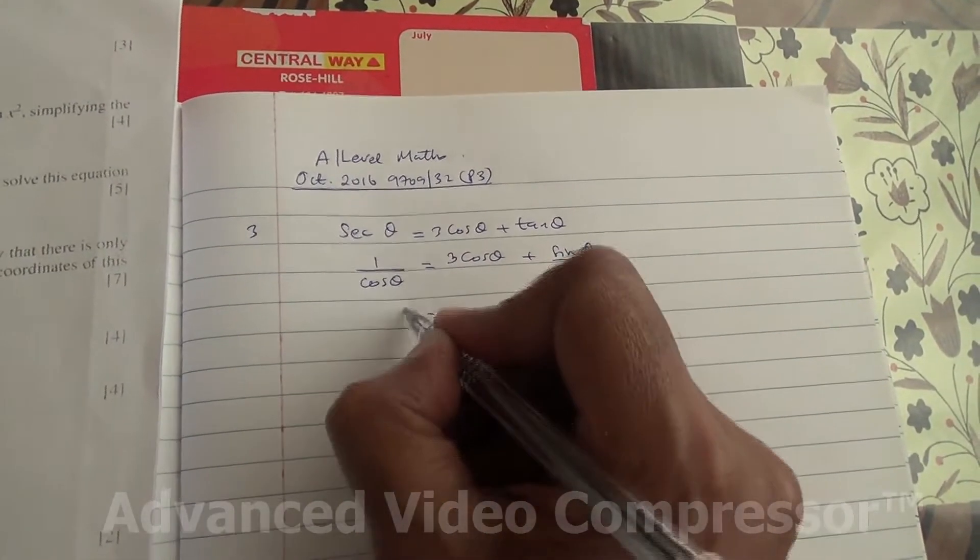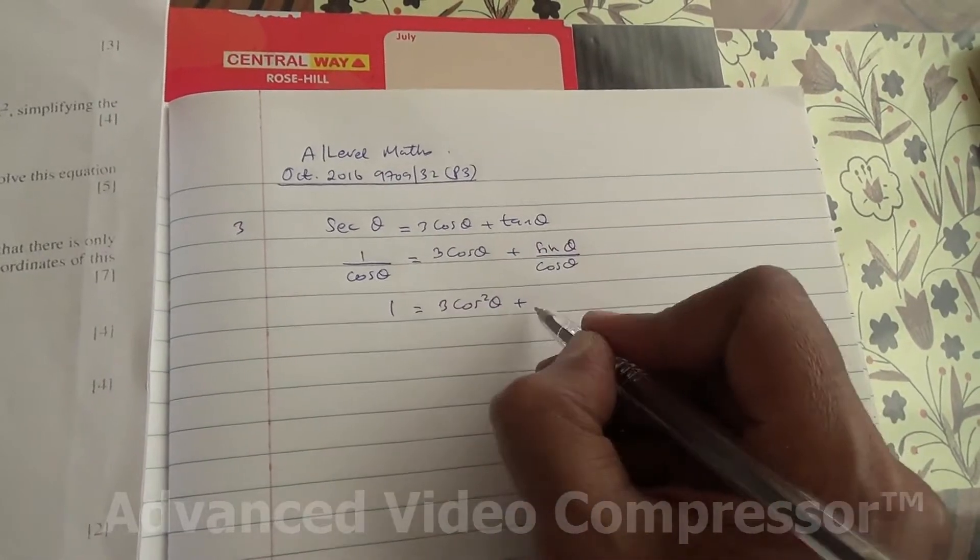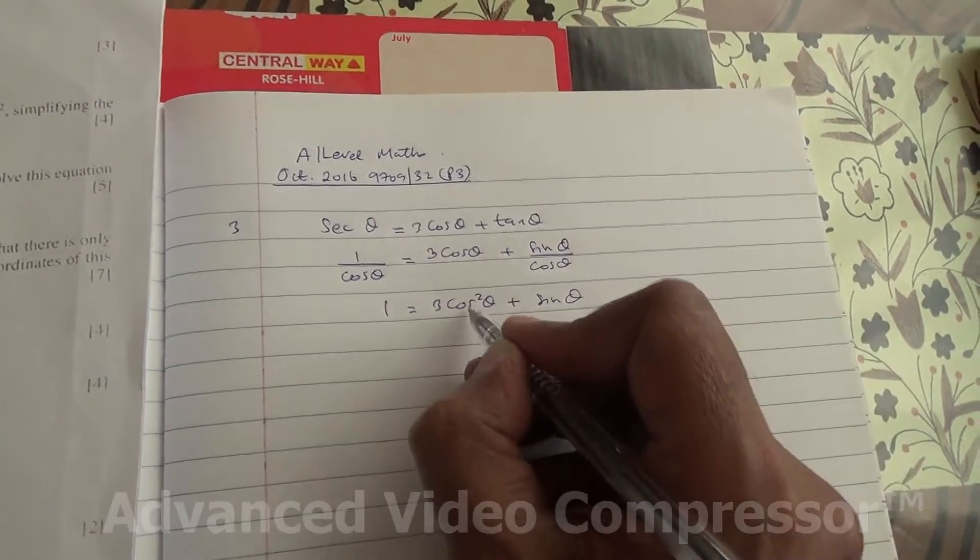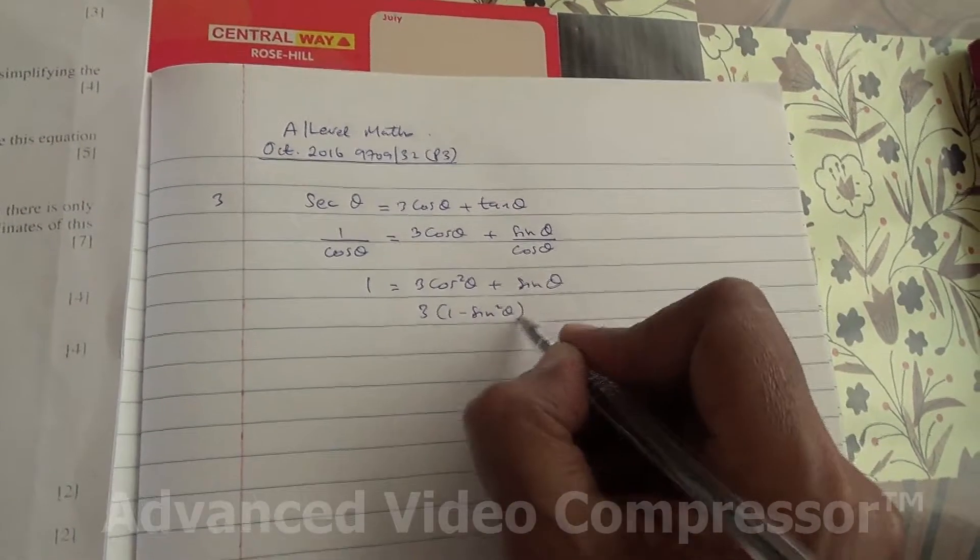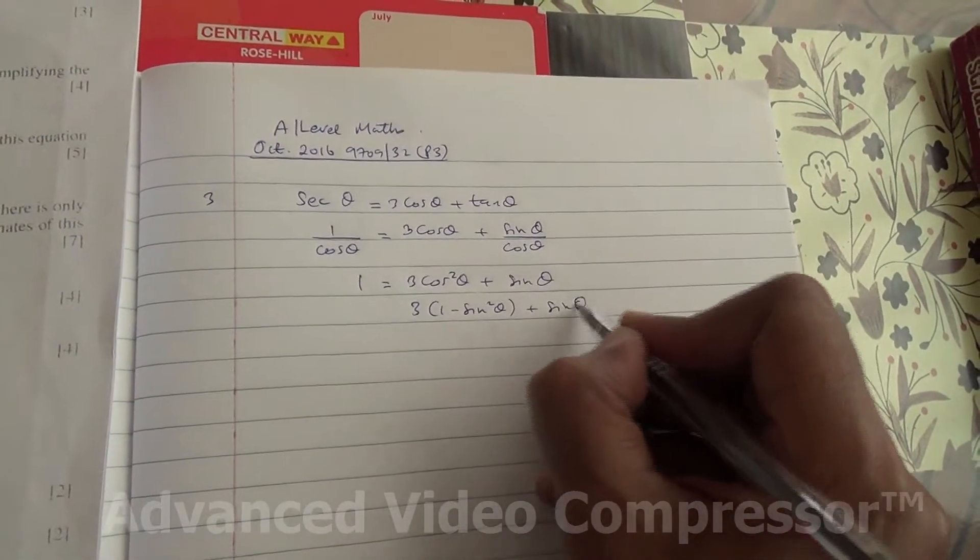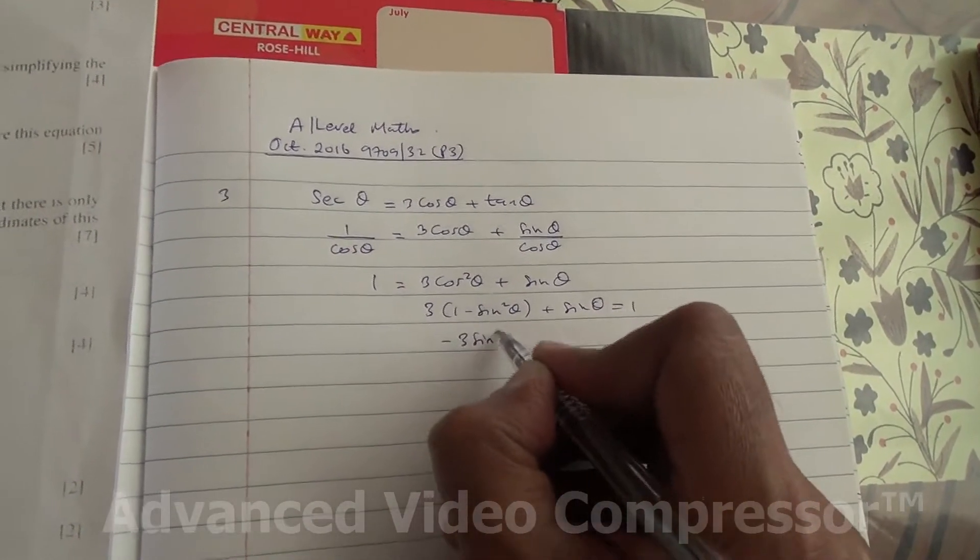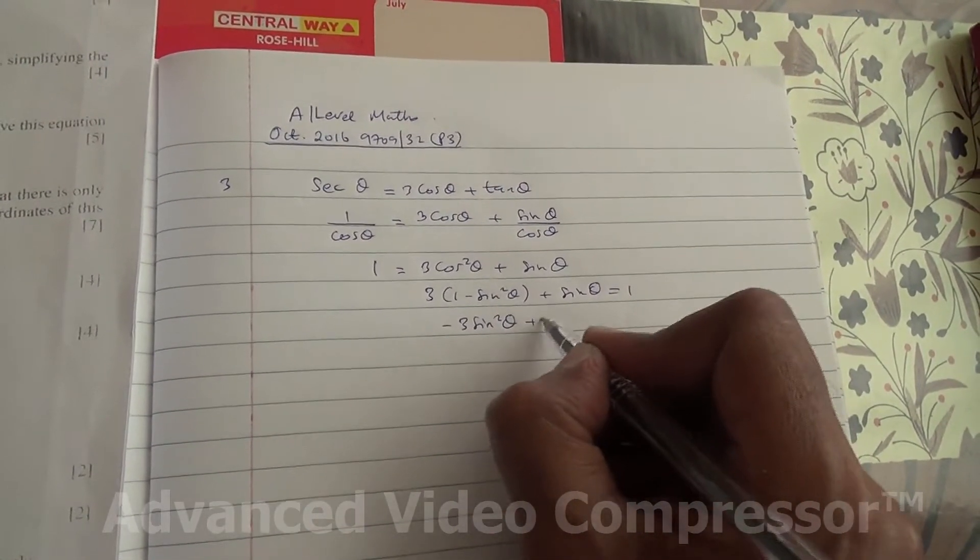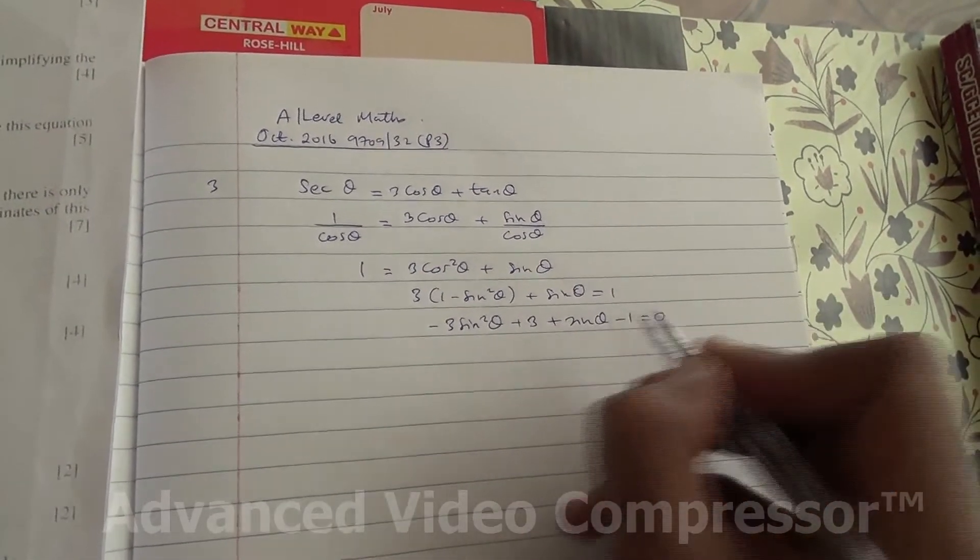Cos times here, we're going to get 1 is equal to 3 cos squared theta, cos and cos cancel out, plus sin theta. 3 into 1 minus sin squared theta using trig identities, plus sin theta is equal to 1. So minus 3 sin squared theta plus 3 plus sin theta minus 1 is equal to 0.